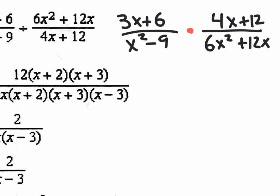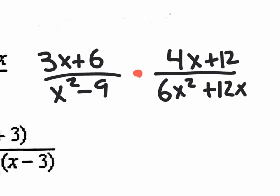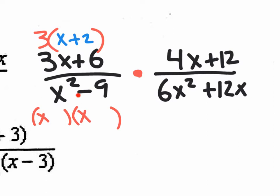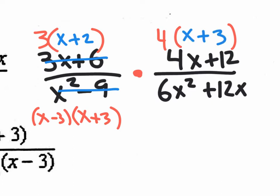Now factor everything possible. On the top left, pull out a 3, leaving X + 2. On the bottom left, X² − 9 is a difference of squares, which factors as (X + 3)(X − 3). On the top right, pull out a 4, leaving X + 3. On the bottom right, pull out a 6X, leaving X + 2. Now we have all the factored forms and can cancel whatever's alike on top and bottom.